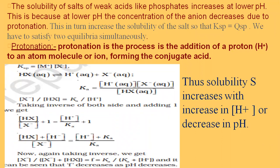The solubility of salts of weak acids like phosphates increases at low pH. At low pH, the concentration of the anion decreases due to protonation, which in turn increases the solubility of the salt so that Ksp equals Qsp. We must satisfy two equilibrium conditions simultaneously. Protonation means the addition of a proton (H⁺) to an atom, molecule, or ion, forming the conjugate acid.